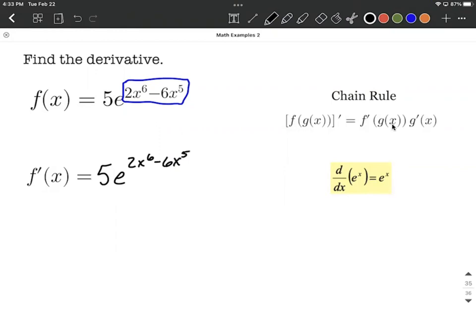You keep that the exact same for the inner function, the g(x), as it's written in our chain rule on the right-hand side. But then next to that, we want to multiply by the derivative of that inner function.